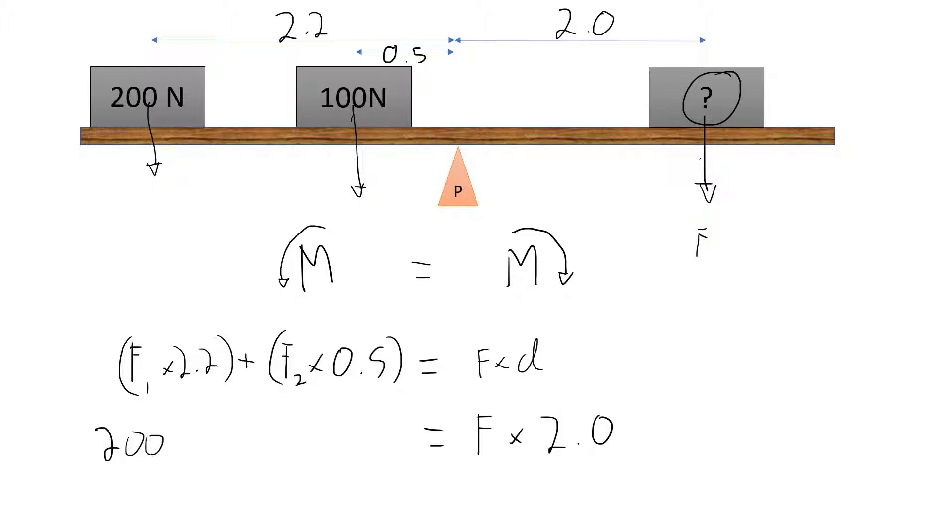And if we have another moment, which is coming from this 100 newtons, acting 0.5 away from here, we can then deduce what our force might be.